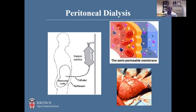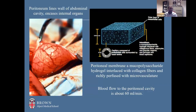Interestingly, some of the earliest research into hemodialysis in the 1920s–1930s actually used cow and sheep peritoneum as the dialysis membrane — so PD and HD grew together and then eventually grew apart. The peritoneal membrane lines the abdominal cavity walls, encases internal organs, and is a semi-permeable membrane with a blood flow of about 60 mL per minute. When you add a dialysate to this blood flow and semi-permeable membrane, you have all the components needed to perform peritoneal dialysis.